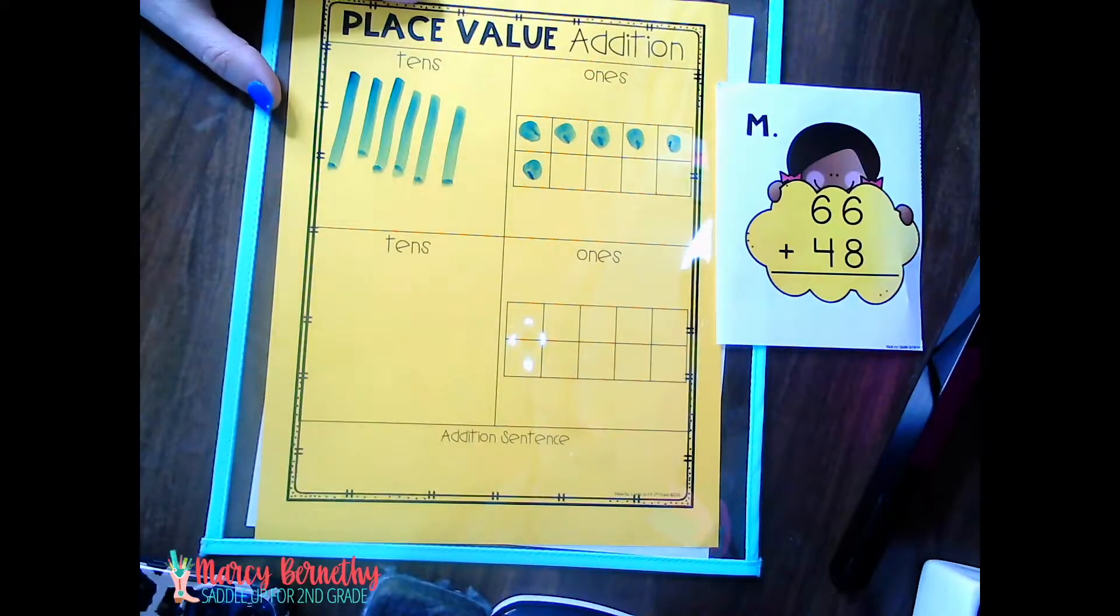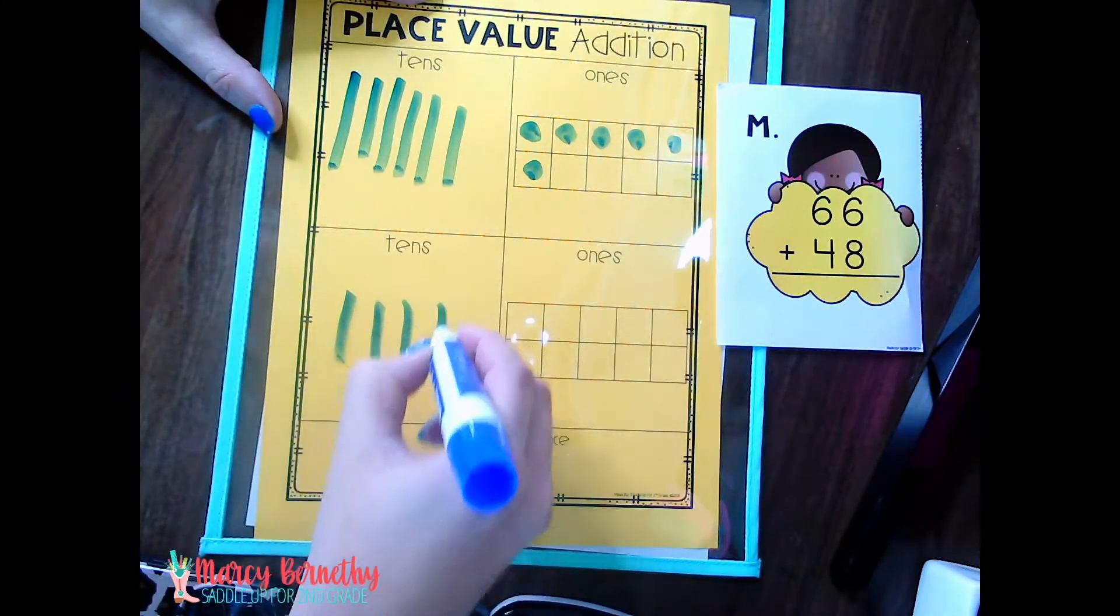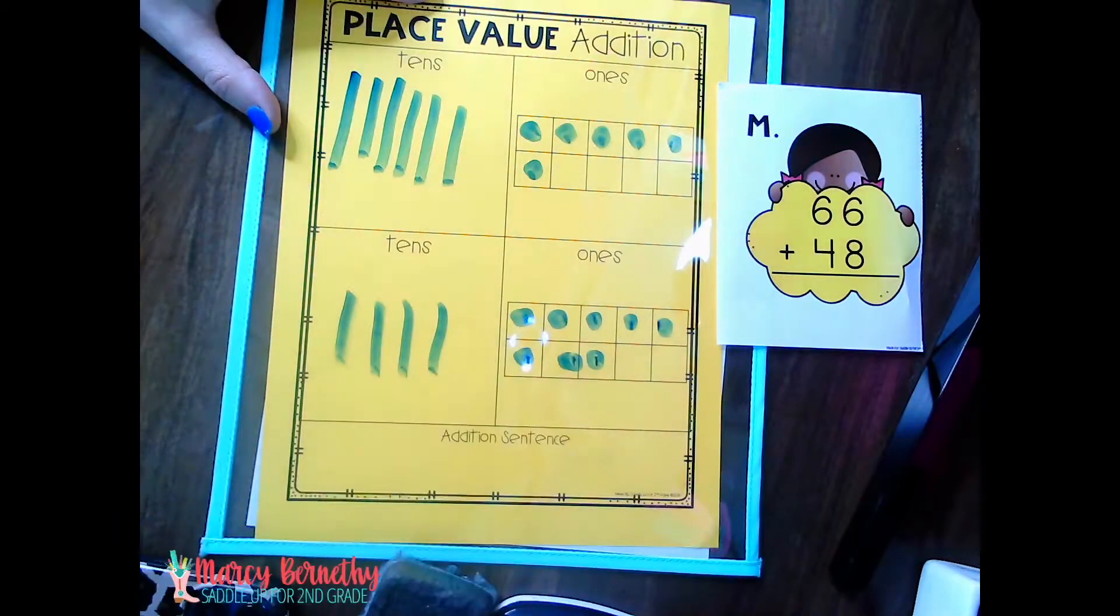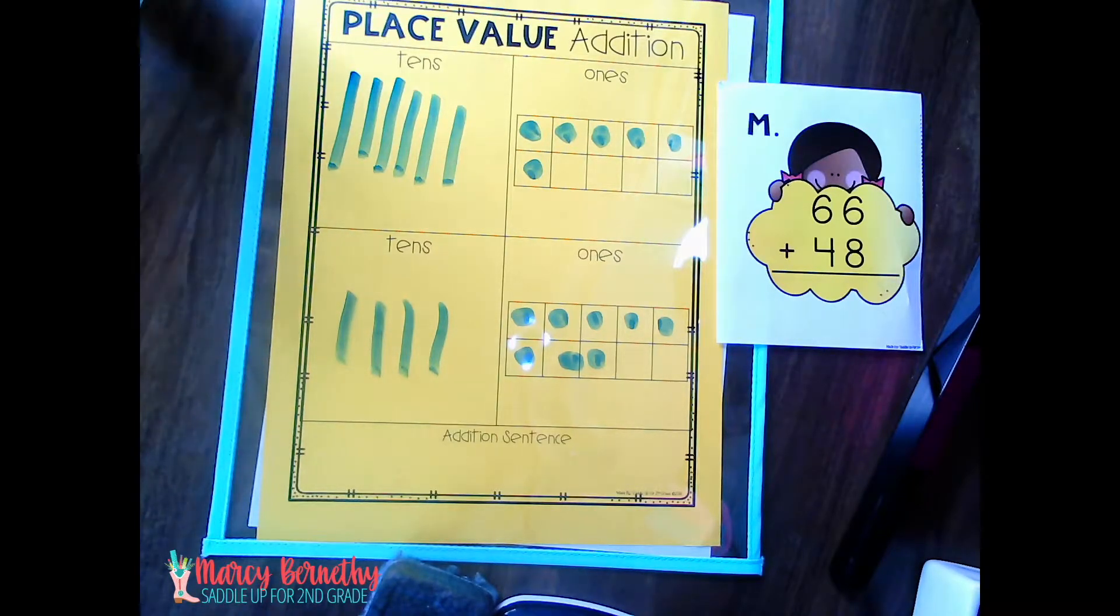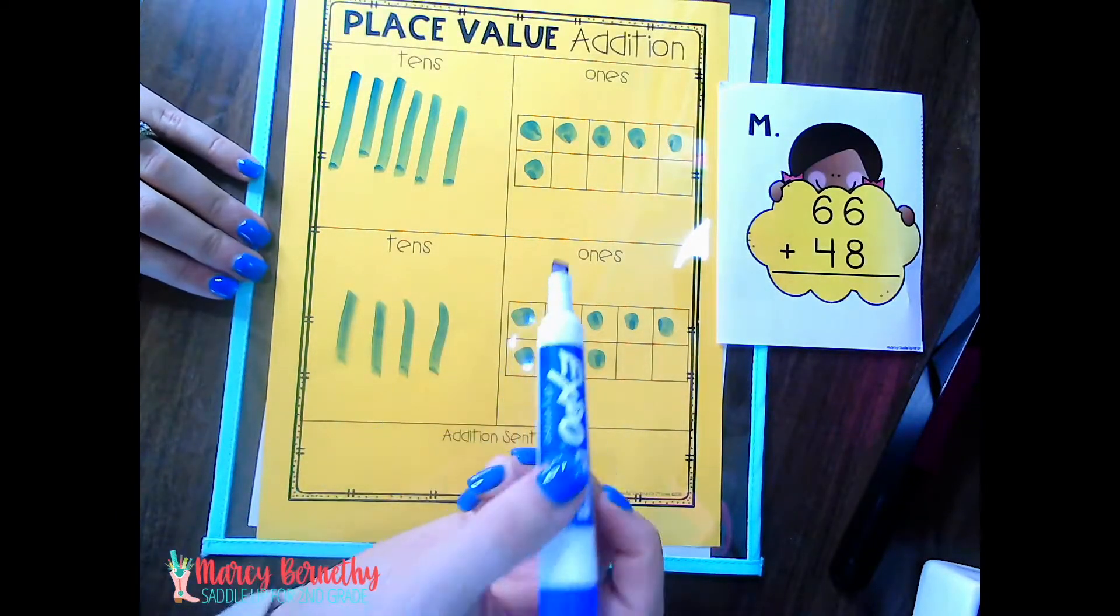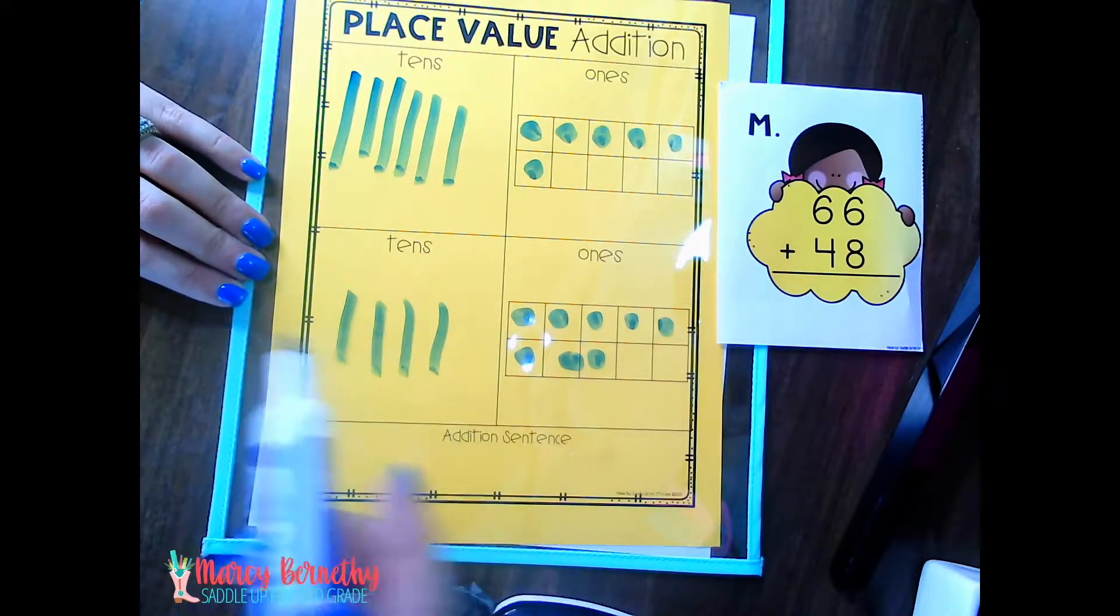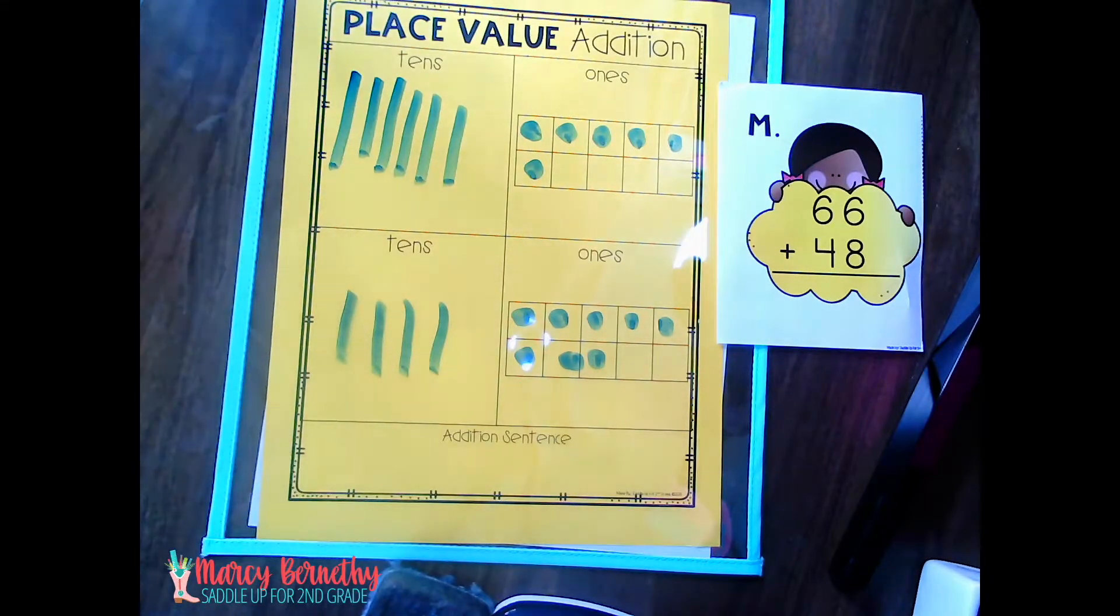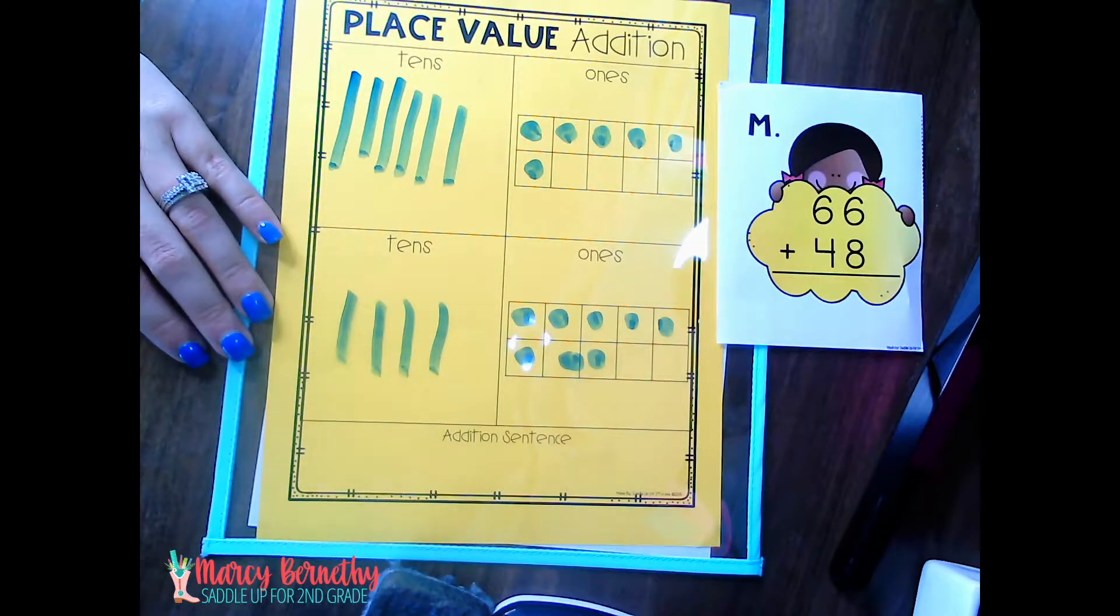Then we're going to build the second addend, which would be 48. When we regroup or when we're adding multi-digit numbers, it's very important to stress that you always start with the ones place first. So they are going to count and add their ones. We've got six plus eight equals 14. Now, 14 is more than 10. So we know that we have to regroup. I would express to your students, okay, we have 14. That's too many. Can we make a trade?